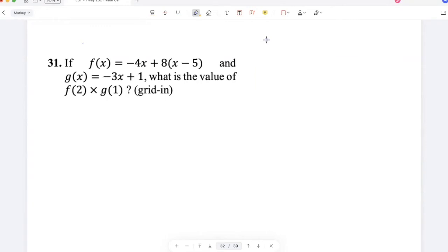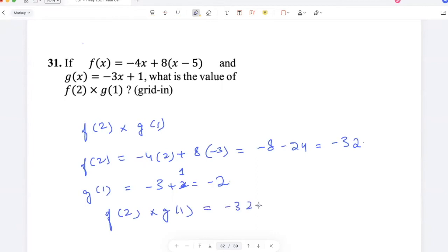If f(x) is this and g(x) is this, what is the value of f(2) times g(1)? f(2) is -4 into 2 plus 8 into -3, that's -8 minus 24, so that's -32. And g(1) is -3 plus 1, that's -2. So f(2) times g(1) will be -32 times -2, which is 64.